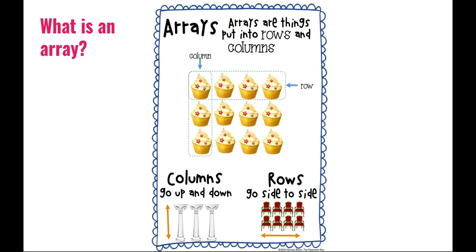It's important to note that in each one of these rows, there are the same number of cupcakes. Think about the rows as a group. So this group has four cupcakes, row two has four cupcakes, and row three has four cupcakes. It's really important to know that each one of these rows has the same number of objects.